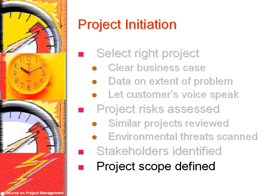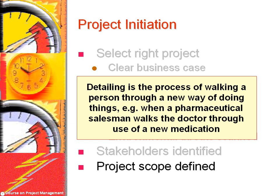The project scope should be defined and documented. Since many people are involved, communications about the scope of the project should be clear and should not be left to paper communications alone. Various employees should be detailed. Detailing is the process of walking a person through a new way of doing things — for example, when a pharmaceutical salesman walks a doctor through the use of a new medication. Everyone pretends that the project has been completed, and in this make-believe world, questions about the scope of the project are fully answered.